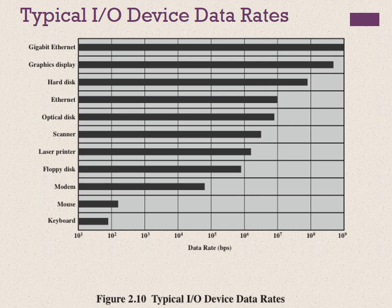Another area of design focus is the handling of I/O. As computers become faster and more capable, more sophisticated applications are developed that support the use of peripherals with intensive I/O demands. Figure 2.10 gives examples of typical peripheral devices in use on personal computers. These devices create tremendous data throughput demands. Strategies employed include caching and buffering schemes, the use of higher-speed interaction buses, more elaborate bus structures, and the use of multiple processor configurations to aid in satisfying I/O demands.